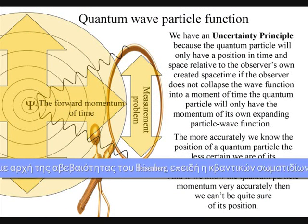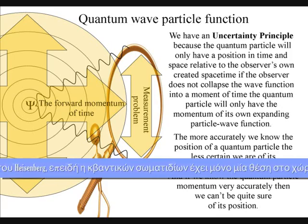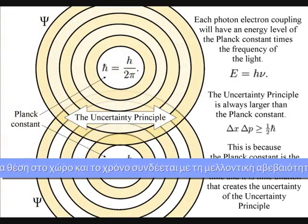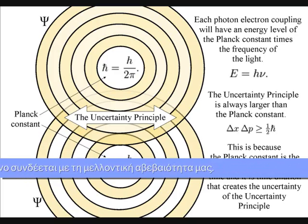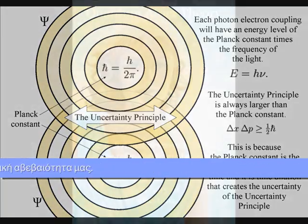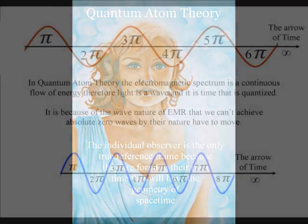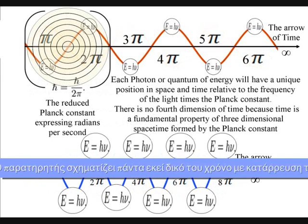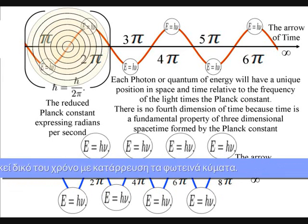Each new photon can be measured either as a point in space over a period of time, or as an area of space at a moment in time, but not as both. This is because the observer is always in the moment of now, collapsing the waves of light into new photons of energy, that will only be relative to the wavelength of the light and the position and momentum of the observer.